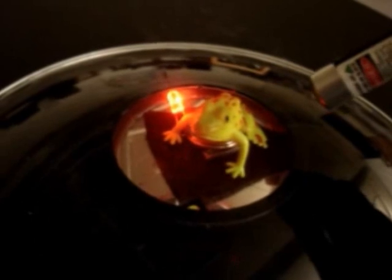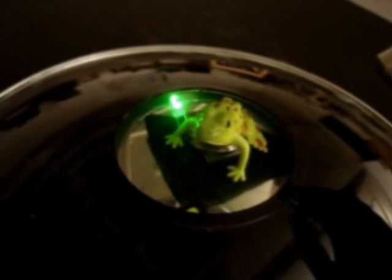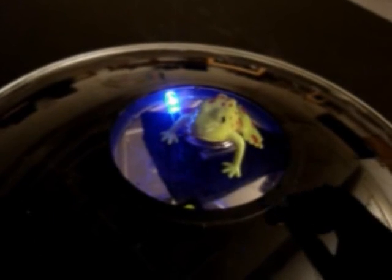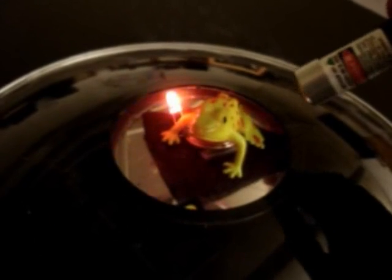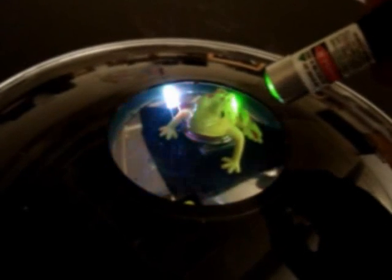The image that forms above the mirage is called a real image because it optically acts as though it really existed. If I take a laser pointer and aim it at the real image of the plastic frog, the laser beam scatters off the image as though it were really there in front of the laser.